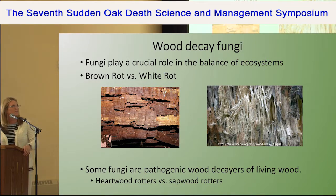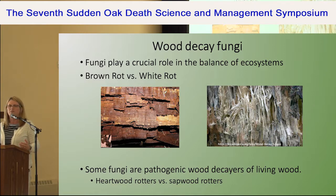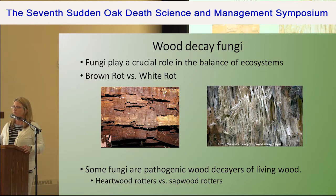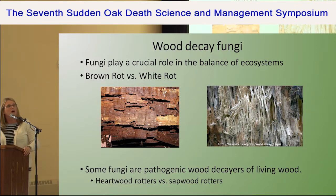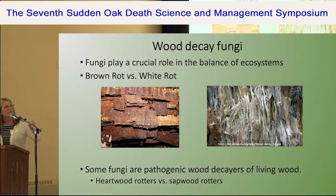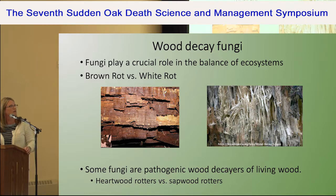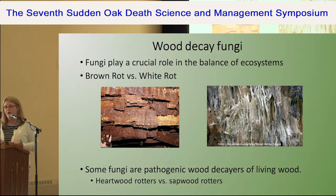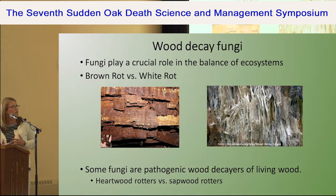First, I want to talk about some of the wood decay fungi. Fungi play a critical role in our ecosystems — they act as decomposers, saprotrophs, and recyclers of plant debris. Without them, we'd be well over our eyeballs in organic matter. Brown rot fungi cause this brown cubical rot by breaking down the hemicellulose and cellulose while leaving the lignin. Compared to white rot, where the lignin is also broken down, leaving a spongy, white, punky rot.